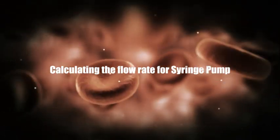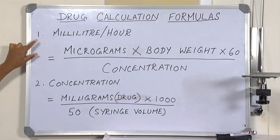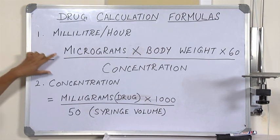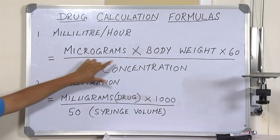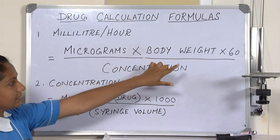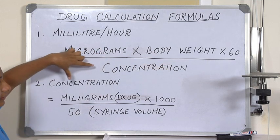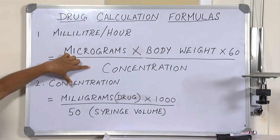Calculating the flow rate for the syringe pump. There are some simple calculations for the rate to be entered into the syringe pump. This rate is calculated in ml per hour, which is micrograms of the drug times the body weight of the patient times 60. This number 60 is a constant, as it is the number of minutes in an hour. This answer then is divided by the concentration of the solution.